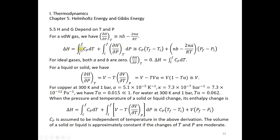For a van der Waals gas, δH/δP = n(b - 2a/RT), and we can compute ΔH by integrating CP dT and integrating this δH/δP times dP. Assuming CP is constant within a moderate temperature range, the first integral is CP·ΔT, and the second is n(b - 2a/RT)·ΔP. For an ideal gas, a = 0 and b = 0, so δH/δP = 0, and ΔH is simply the integral of CP dT.